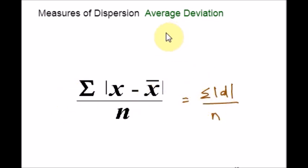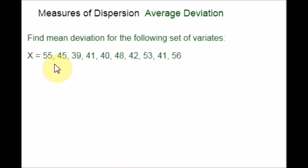Now, let's see how to compute mean deviation. Same like range and quartile deviation topics, we are going to discuss examples for both the types, ungrouped data as well as grouped data. Now, let's start an example with ungrouped data. Here is an example. A set of data is given. Find mean deviation for the following set of variates.